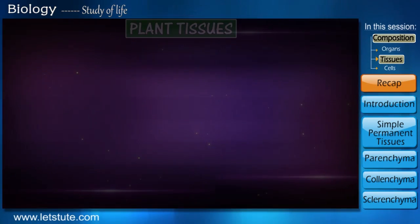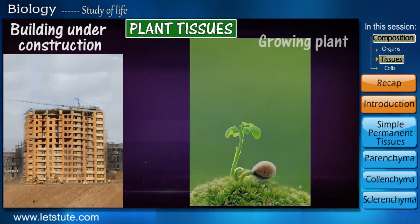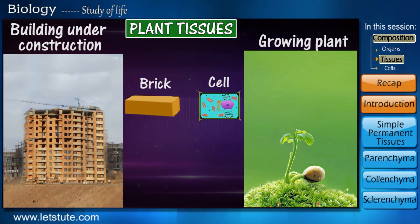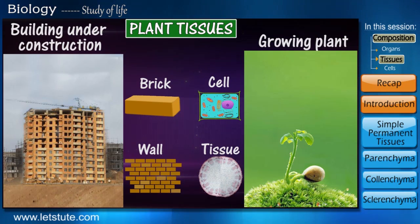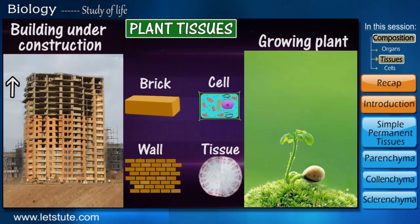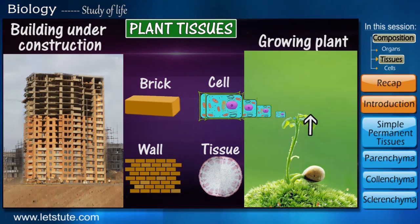Before we move ahead, let's compare a building under construction to a growing plant. As you know, we have compared a brick to a cell and a wall to a tissue. In a building under construction, an increase in height is because of the addition of bricks, whereas in a plant it is due to the addition of new cells.